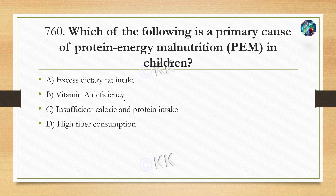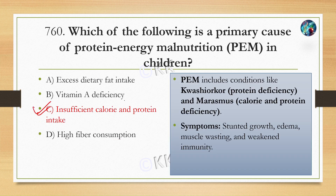Which of the following is a primary cause of protein energy malnutrition in children? Option A: Excessive dietary fat intake, Option B: Vitamin A deficiency, Option C: Insufficient calorie and protein intake, Option D: High fiber consumption. The correct answer is Option C. In protein energy malnutrition, two diseases are generally seen: kwashiorkor, caused by protein deficiency, and marasmus, caused by deficiency of both calories and protein. Symptoms include stunted growth, edema, muscle wasting, and weakened immunity.